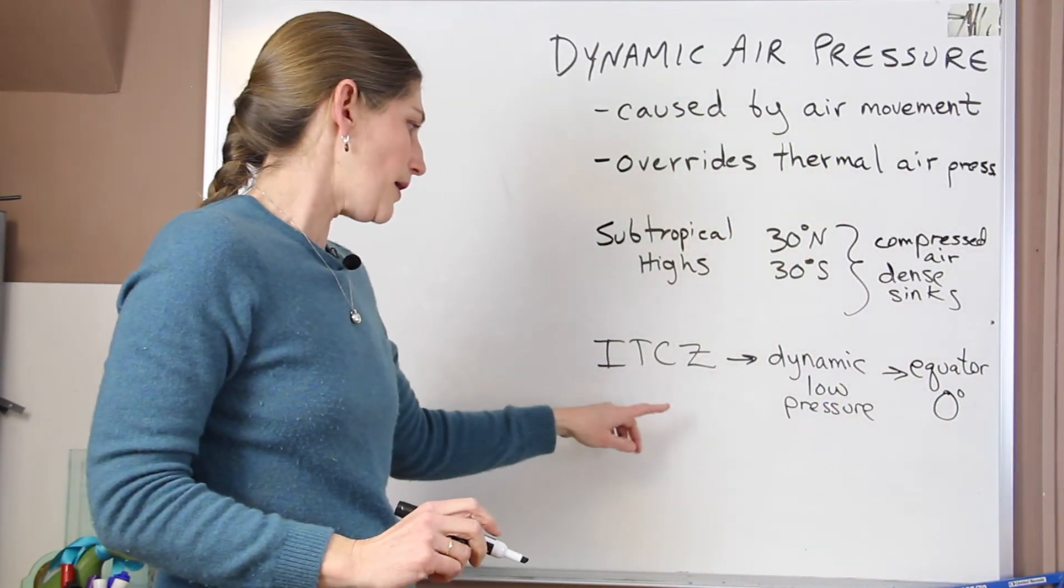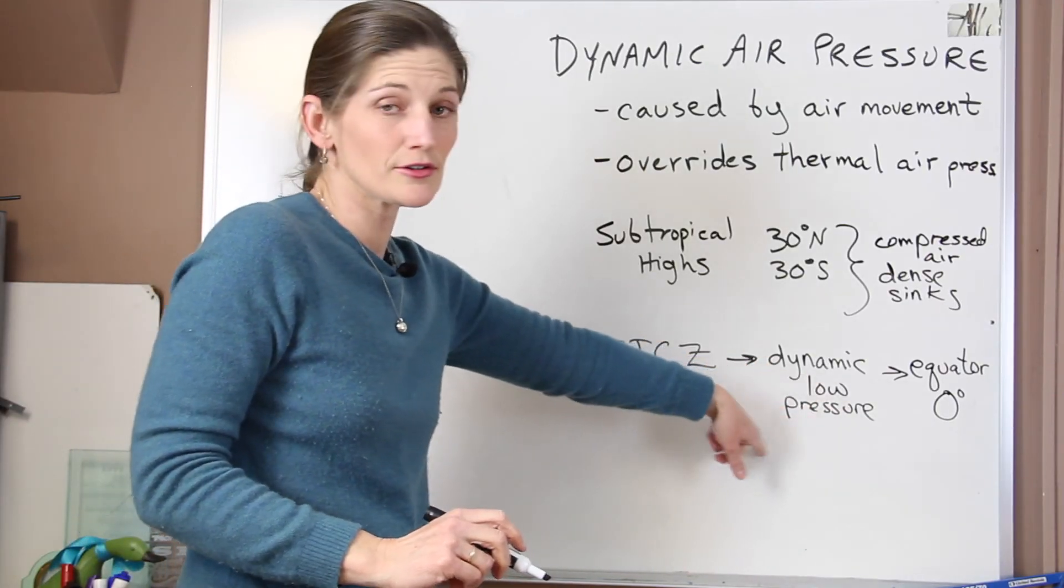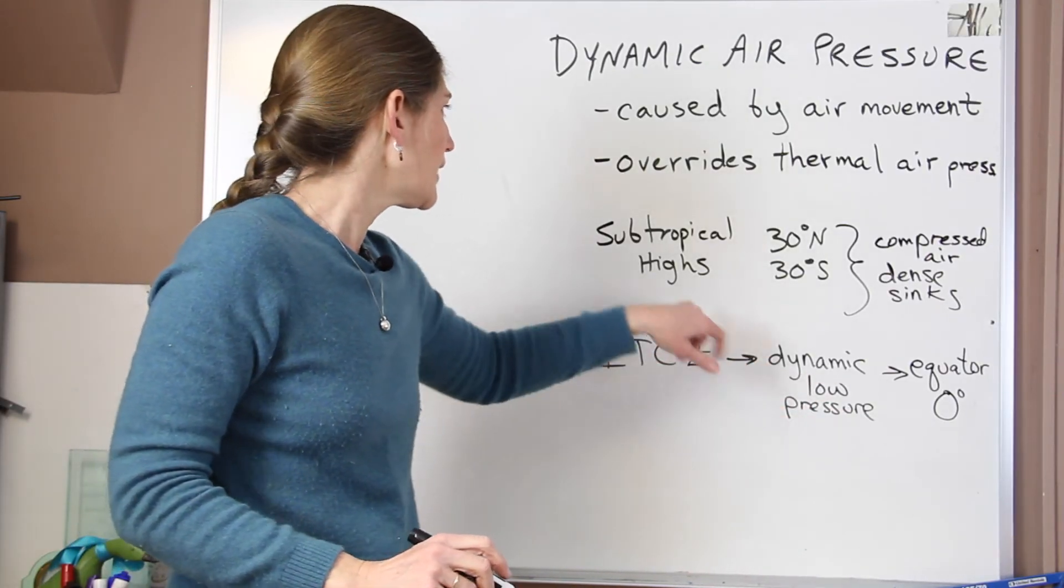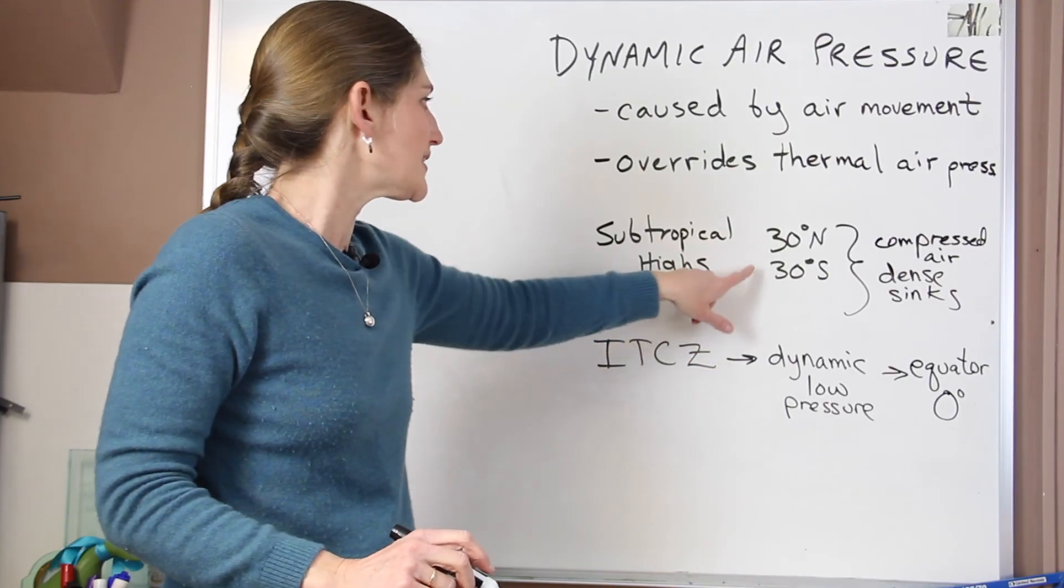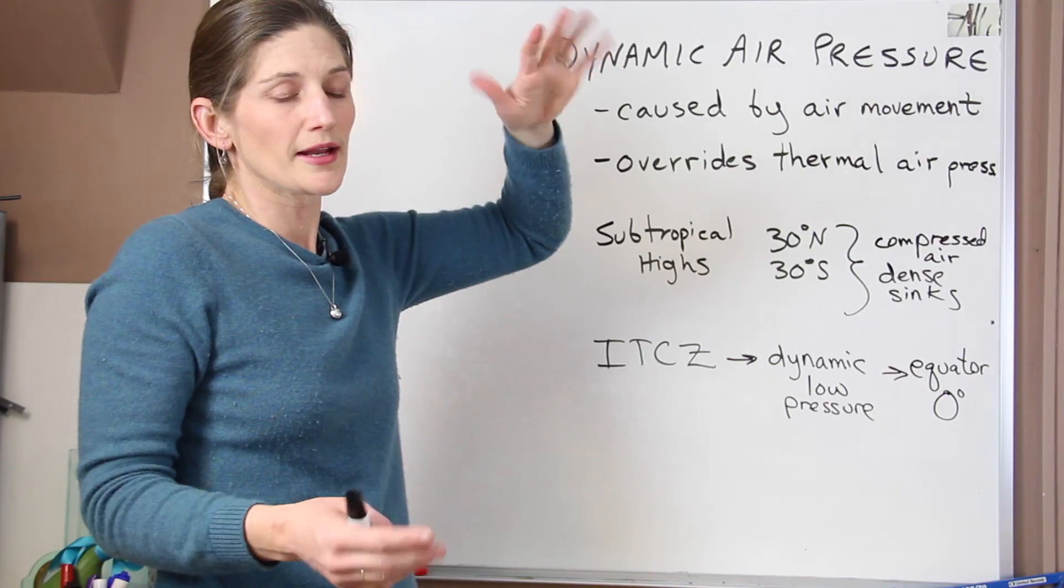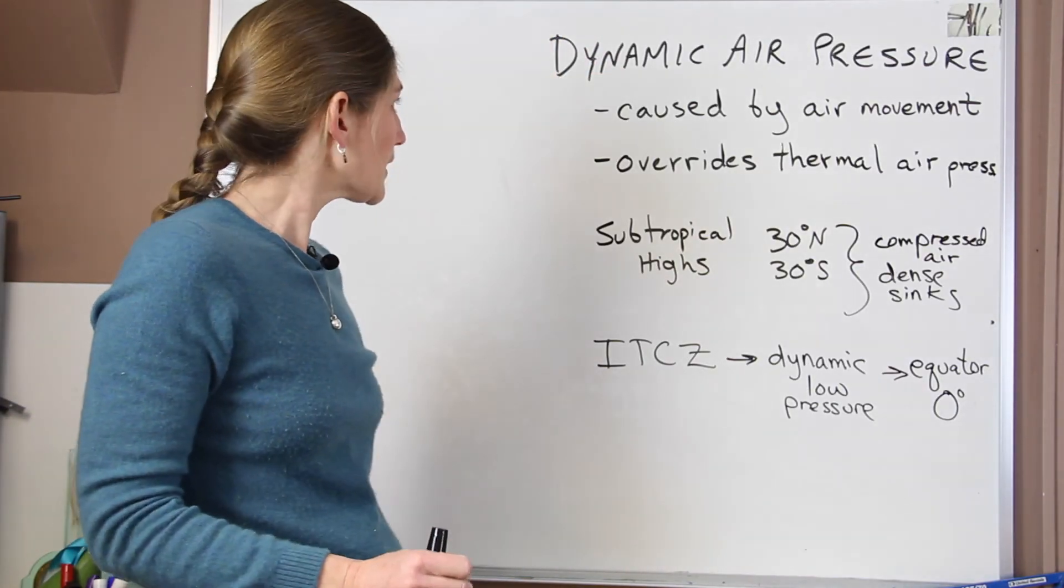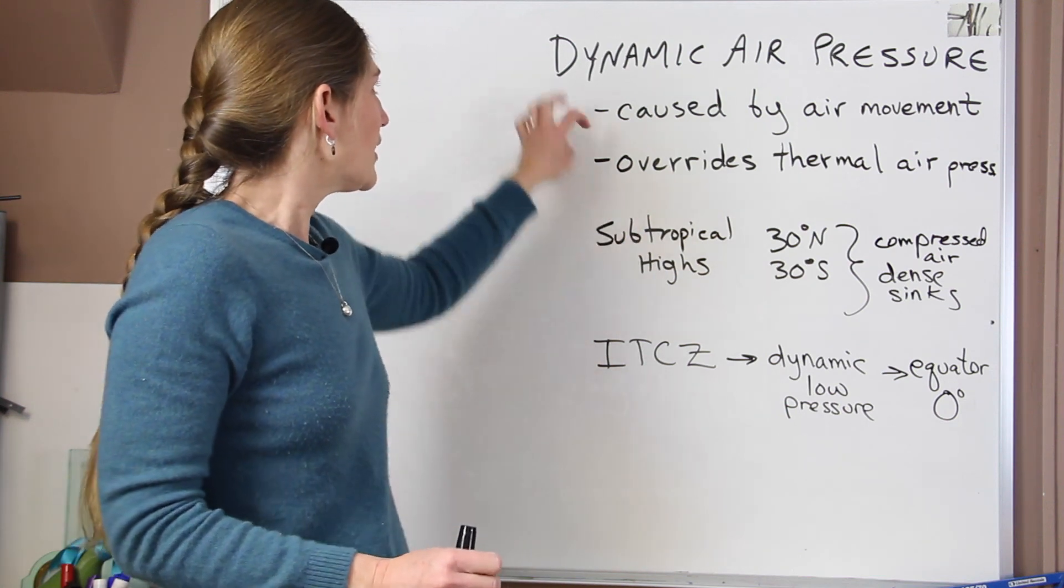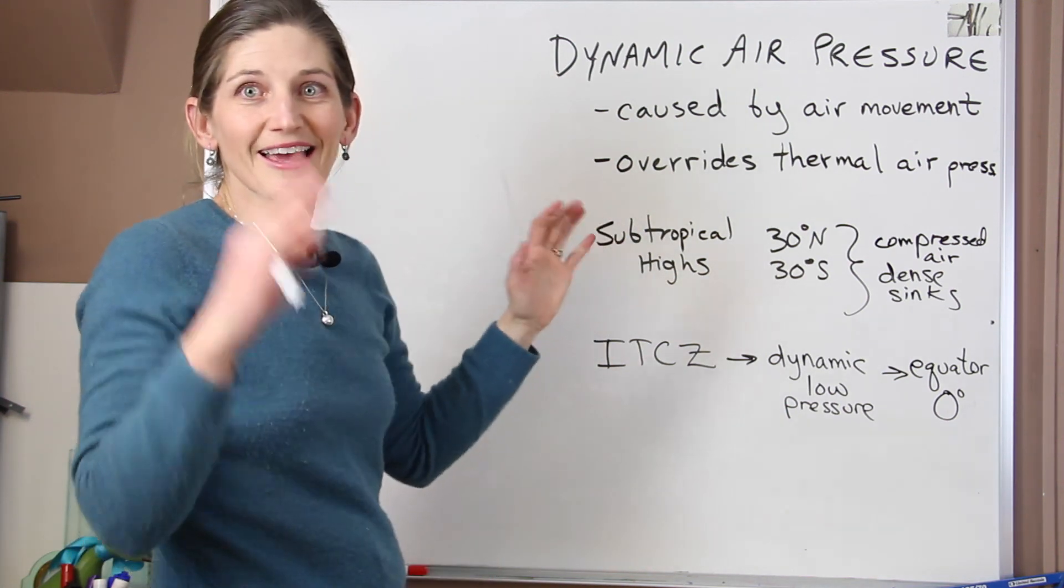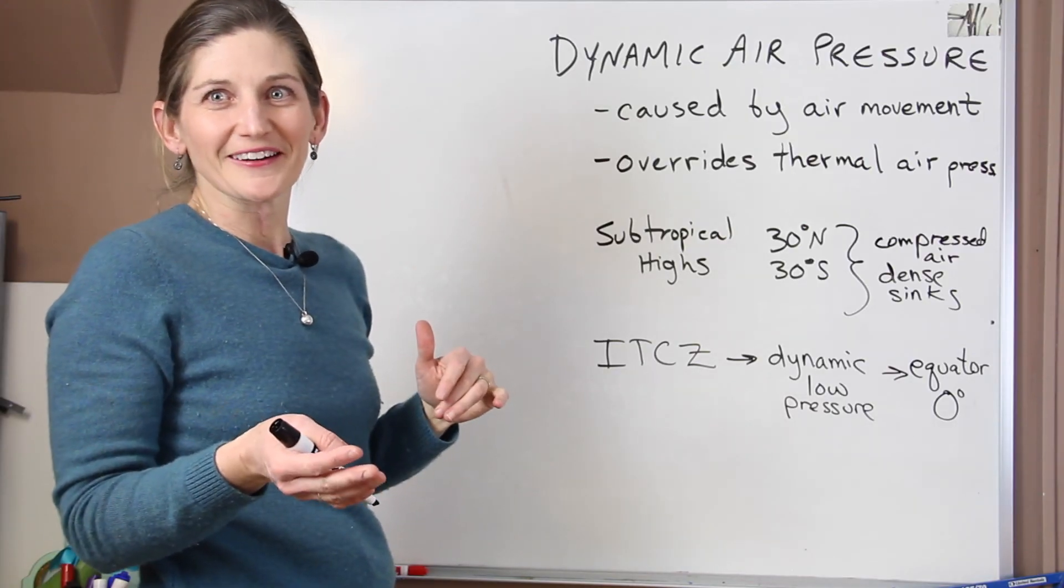We also see another dynamic low pressure at 60 degrees north and south latitude. And we have a dynamic high that's centered over our poles. So the north pole, 90 degrees north latitude. And the south pole at 90 degrees south latitude. So those are kind of the overriding systems that we see. And that's going to start to control our global wind belts which we'll talk about later.